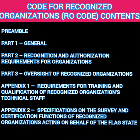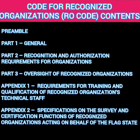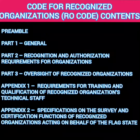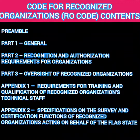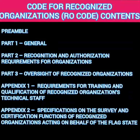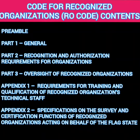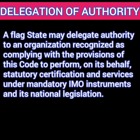In addition to these parts, there are two appendices in this code. Appendix 1 is about the requirements for training and qualification of recognized organizations' technical staff. Since RO is a professional organization, the people working in it would be required to have certain qualifications and undergo required training to carry out this job on behalf of the flag administration. Appendix 2 is about specifications on the survey and certification functions of the recognized organizations acting on behalf of the flag state, covering many modules and sub-chapters about statutory certificates to be issued by the recognized organization.